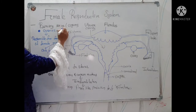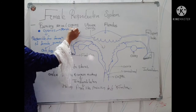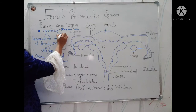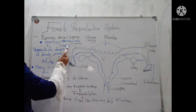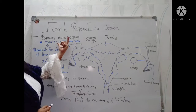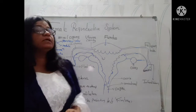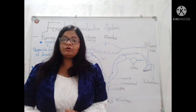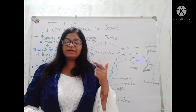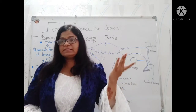The ovary also has two main parts: the peripheral cortex, which is the ovarian wall, and the medulla. So the ovary has two compartments — peripheral cortex and medulla. This is all about the ovary.